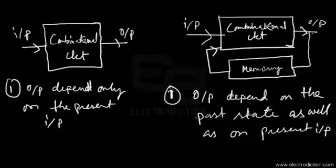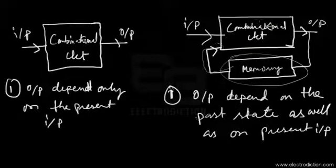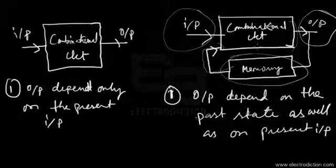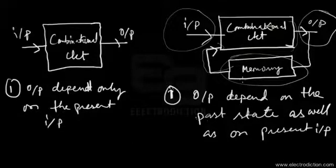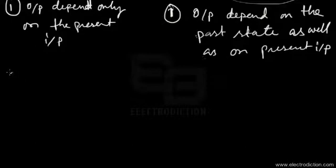In sequential circuits, the output state is stored in the memory element, which feeds state variables back into the combinational logic part. Upon arrival of new inputs, a new output is determined by processing the present inputs as well as the previous state of the circuit.